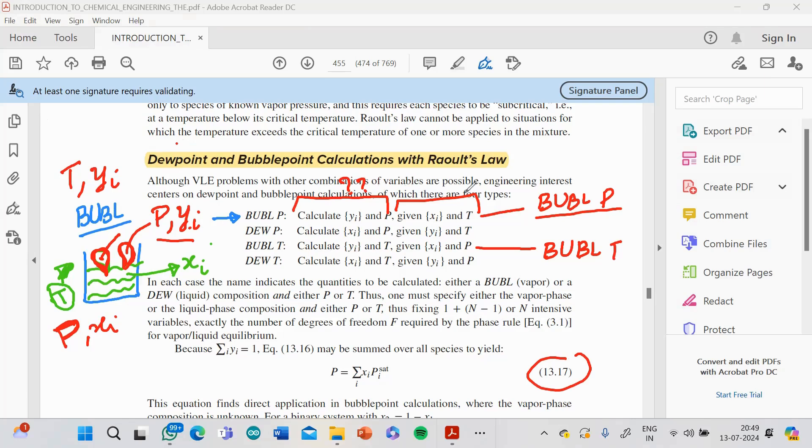See, although the text is very beautifully written, although problems with other combinations of variables are possible, engineering interest centers on dew point and bubble point calculations, of which there are four types. What we are seeing here: there are four types. In this session I have explained to you what is the bubble point pressure and what is the bubble point temperature, or exactly what is the starting point—how do I carry out the experiment to determine the bubble point calculations. That means, what is my initial state? I take a beaker with a liquid mixture, then I start doing certain things.